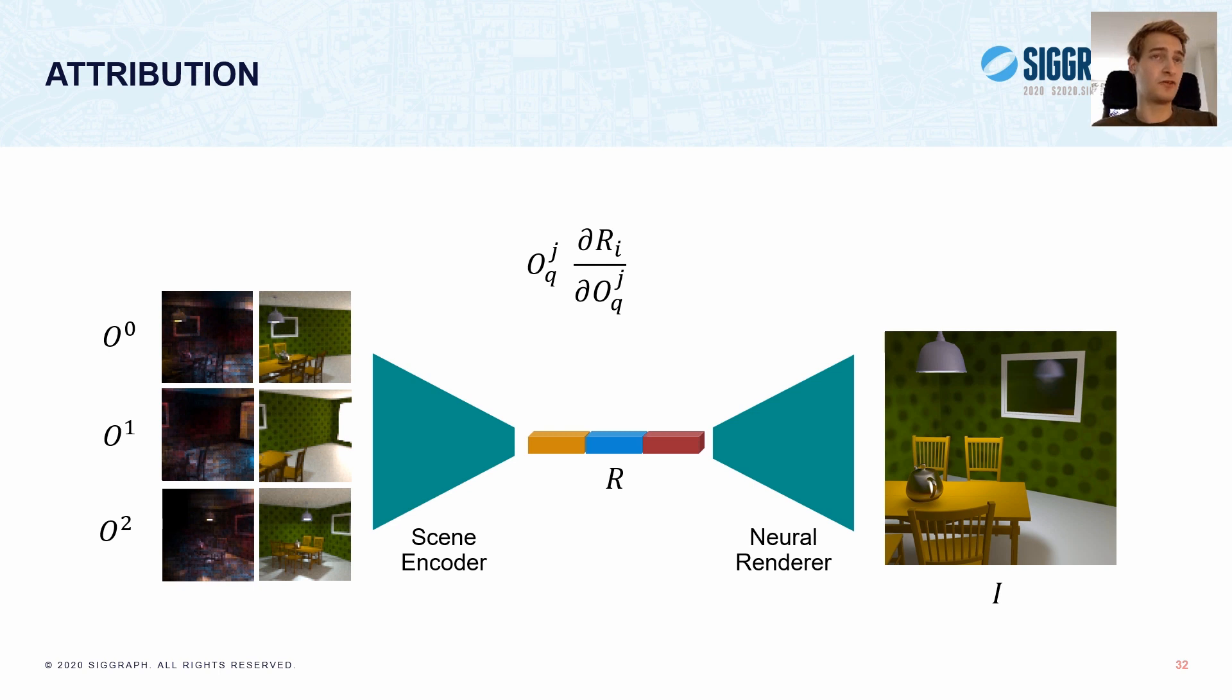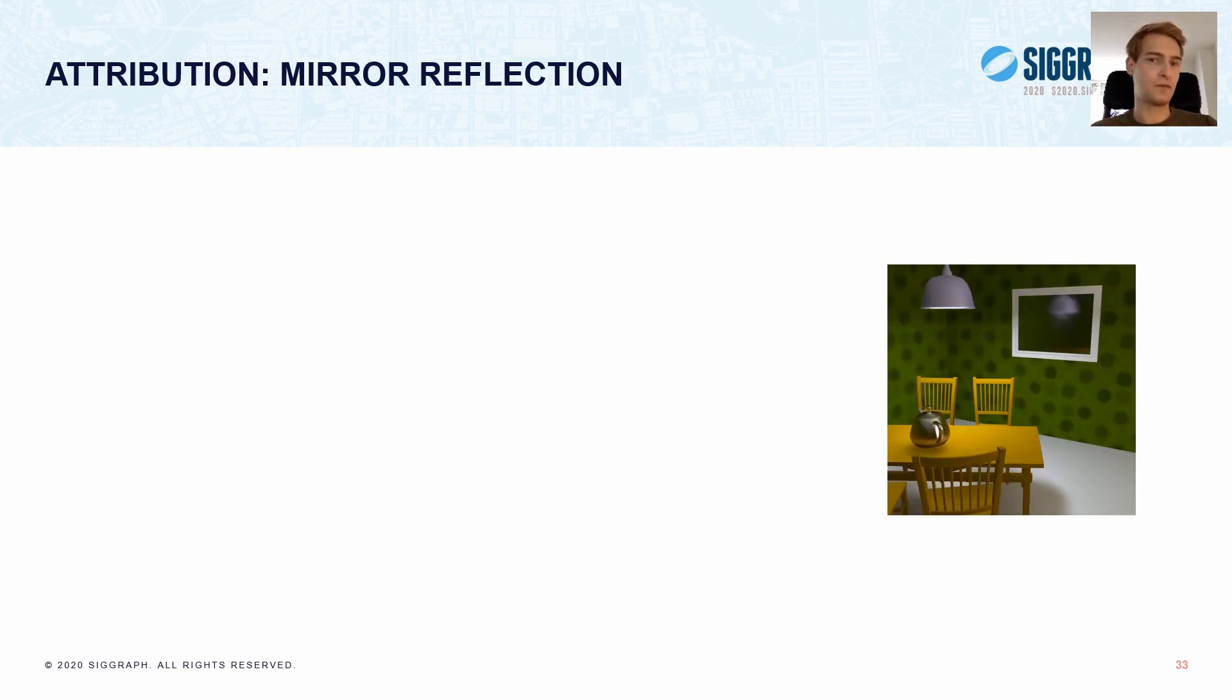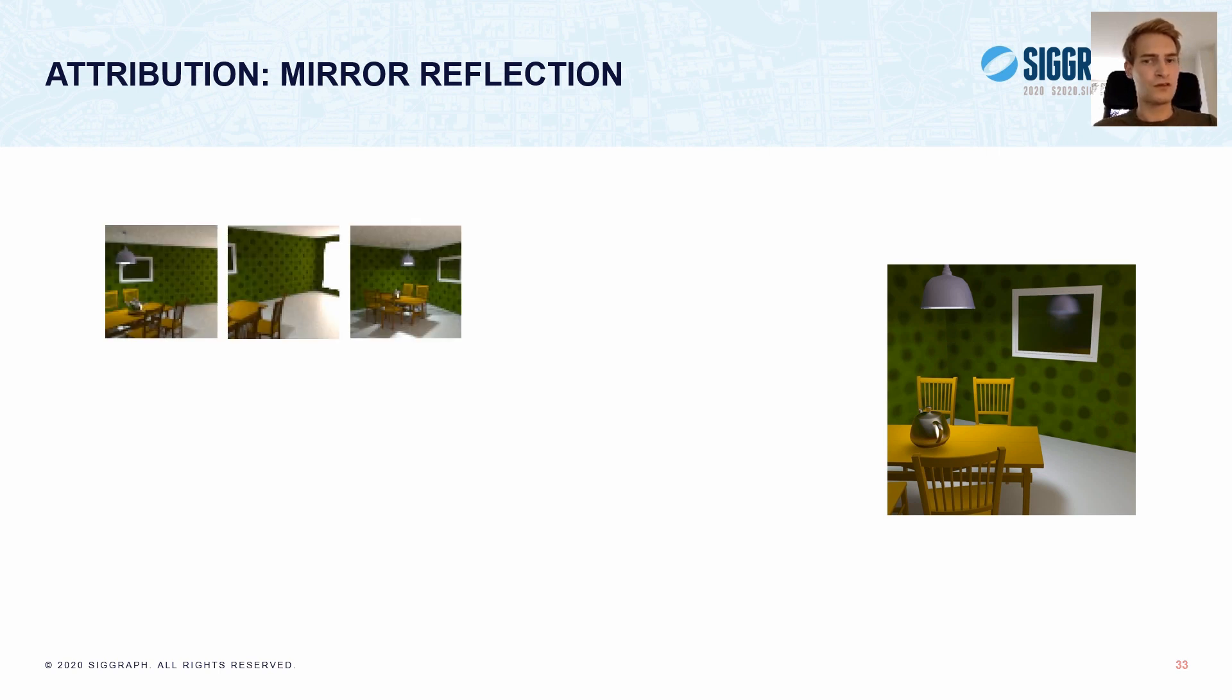But, we can take this attribution even further, by studying specific patches in the output image. Our goal here is to identify information that was relevant for the patch, and also through which partitions this information was delivered. So, let's take a closer look at this. Say we have this generated image again, and then we have the observations of the scene. So, now we want to analyze how the network produces this specific patch that contains a reflection of the light fixture in the mirror. And, since the gbuffer doesn't contain information about reflected objects, the neural renderer must rely on the scene representation to synthesize the reflection.